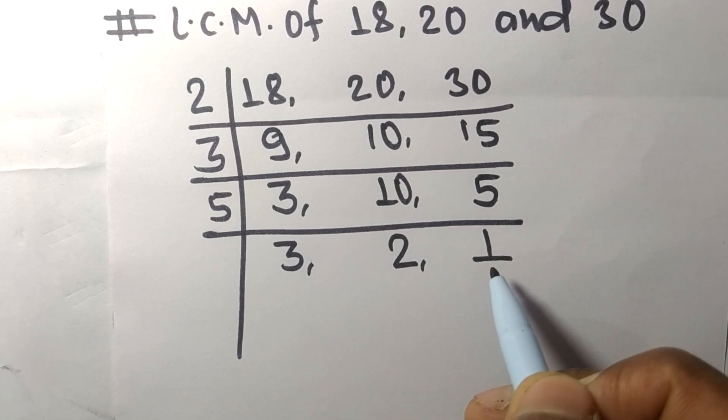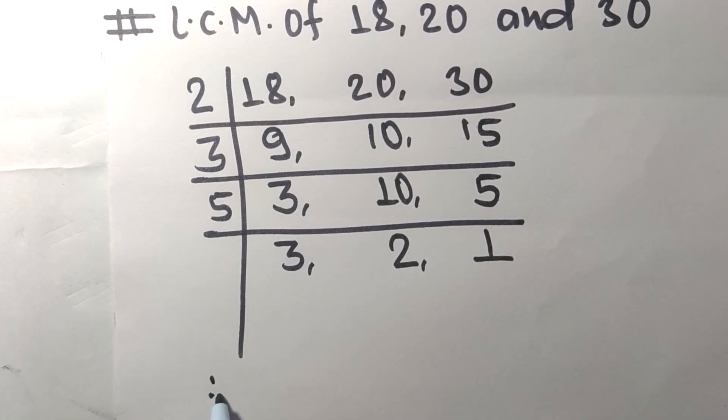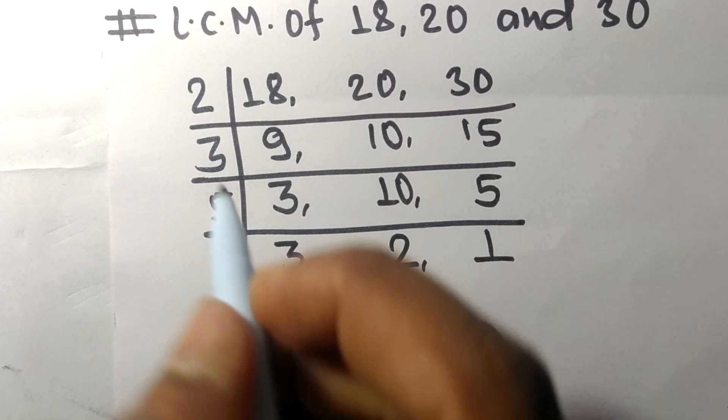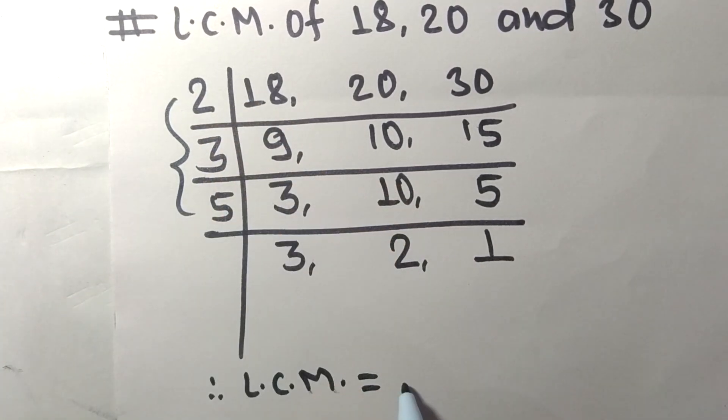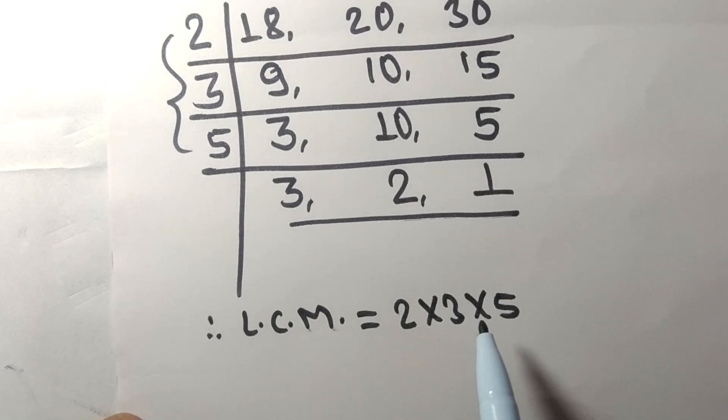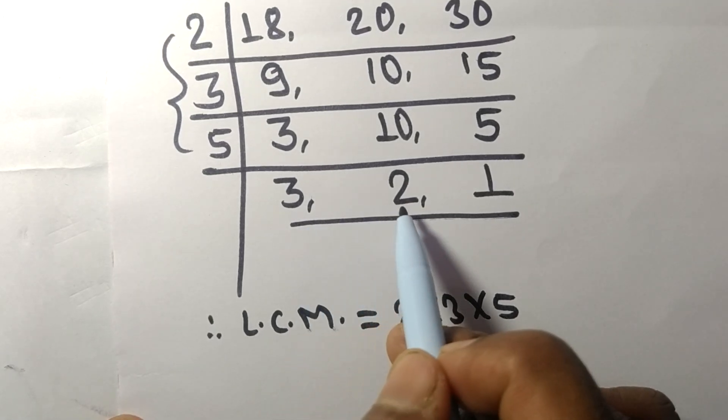Therefore the LCM is equal to, from this side it is 2 times 3 times 5, and from this side we choose the numbers greater than 1, that is 3 and 2, so multiplied by 3 and 2.